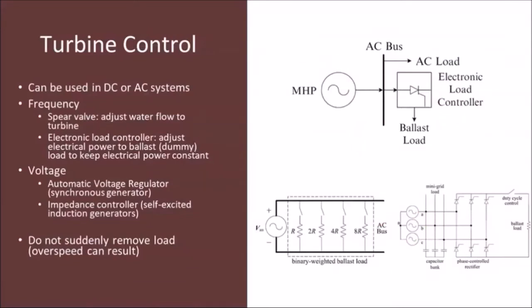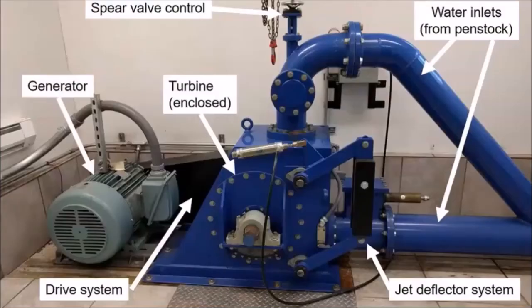A huge advantage of using microhydro is that we can connect directly to an AC load. By diverting just a portion of the river, we can ensure the penstock is always full of water, always supplying mechanical power to the turbine, rotating the generator 24 hours a day. To maintain constant frequency, we can either use a spear valve to adjust the amount of water into the turbine, or use an electronic load controller that balances changes in electrical load with power to a resistive load. Here you can see a multi-jet Pelton turbine installation with water coming from penstocks, a spear valve, and the generator coupled to the turbine through a drive system.